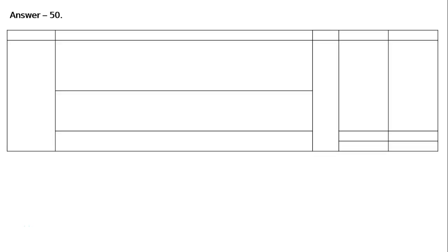This is question 50. X and Y are partners in a firm sharing profits in the ratio of 3 to 2. They admitted Z as a new partner and fixed the new profit sharing ratio as 3 to 2 to 1. At the time of admission of Z, debtors and provision for doubtful debts was 50,000 and 5,000 respectively.